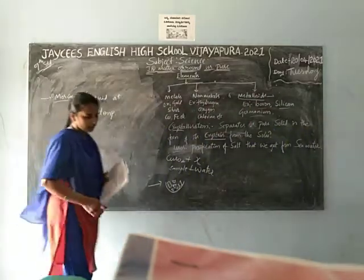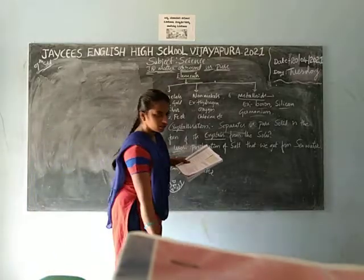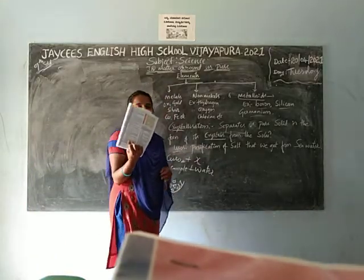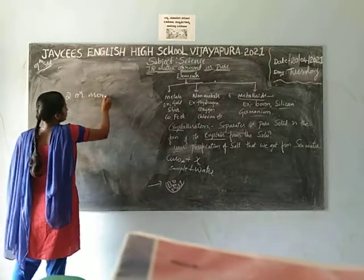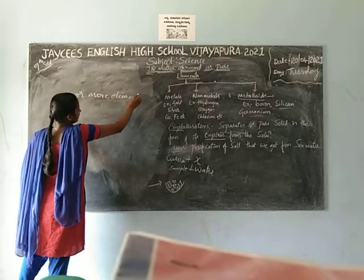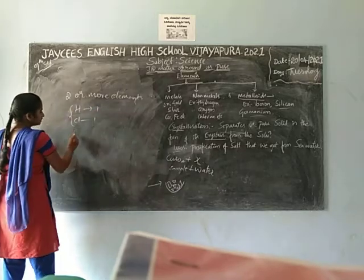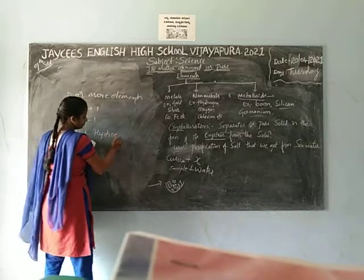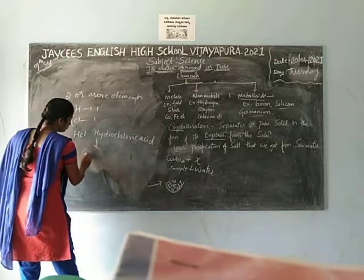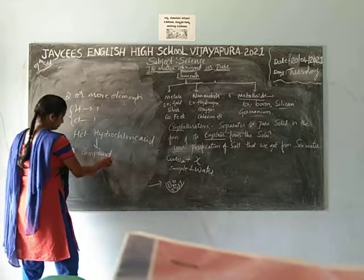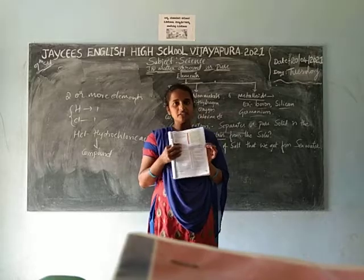Compounds are formed from two or more elements. Hydrogen and chlorine are two elements that combine to form a compound — hydrochloric acid (HCl). These two elements combine and a new compound is formed through chemical combination.